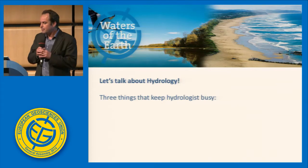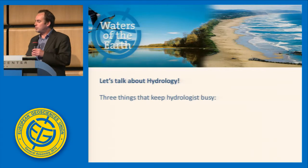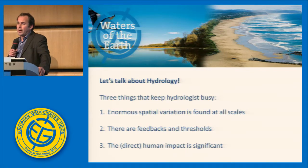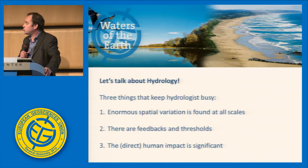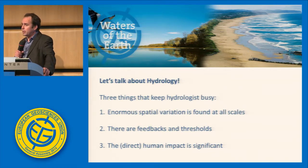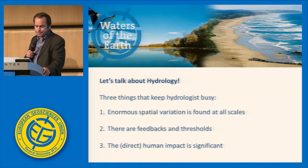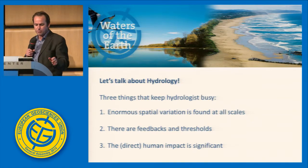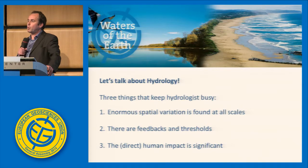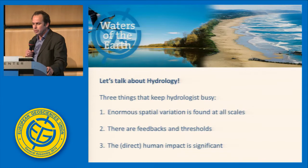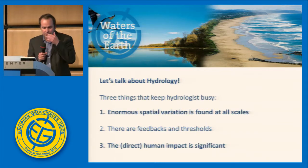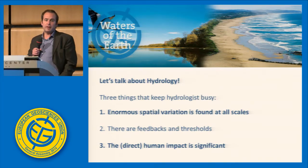Now let's talk about hydrology. There are a number of things that keep hydrologists busy. Three particular ones: first, water on Earth has an enormous spatial variation found at different scales — 11 orders of magnitude from the pore to the global scale. Second, there are obvious feedbacks and thresholds that make systems shift from one mode to another, often unpredictably. Third, there is a very distinct direct impact of humans on the hydrological cycle — not the indirect impact by climate change or CO2 emission, but direct influence on the water cycle.